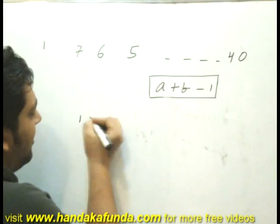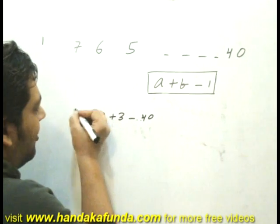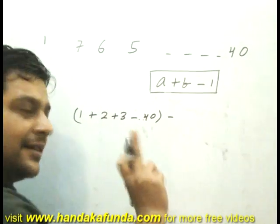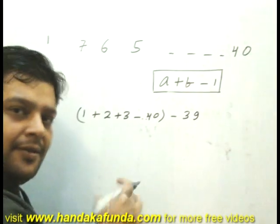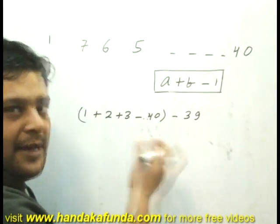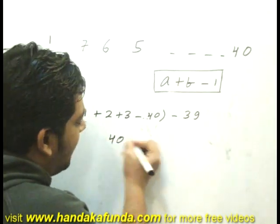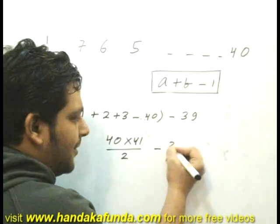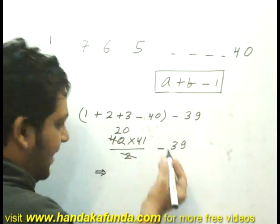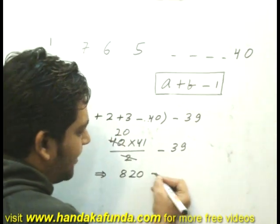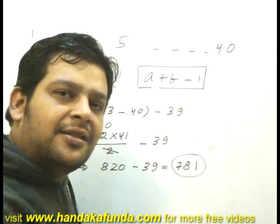So my answer effectively will be 1 plus 2 plus 3 — I add the entire thing till 40 — and for the 39 operations, I remove 39 from it. The sum of numbers from 1 to n is n(n+1)/2, so the sum from 1 to 40 is 40 × 41 / 2 = 820. Minus 39 for the 39 operations gives 820 minus 39, which is 781. And that, Prashant, is the answer.